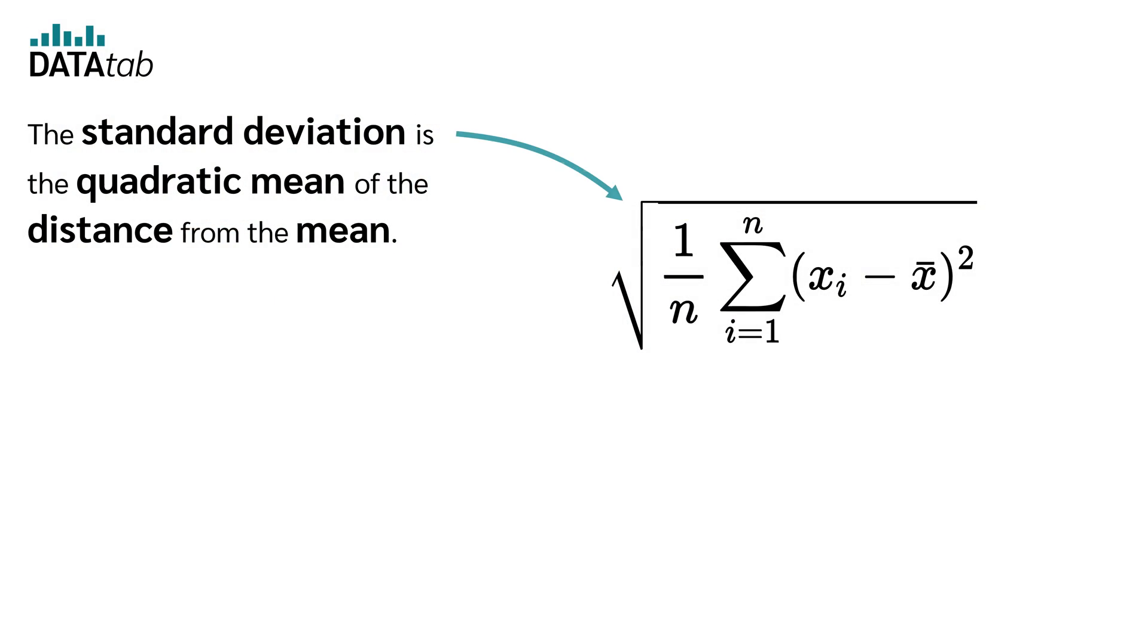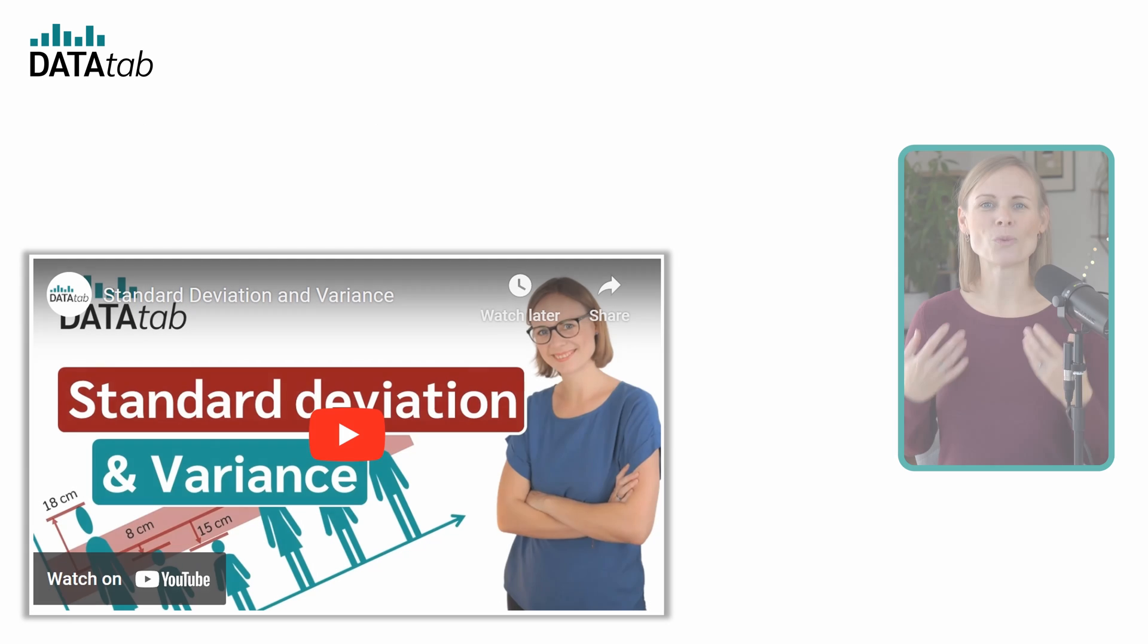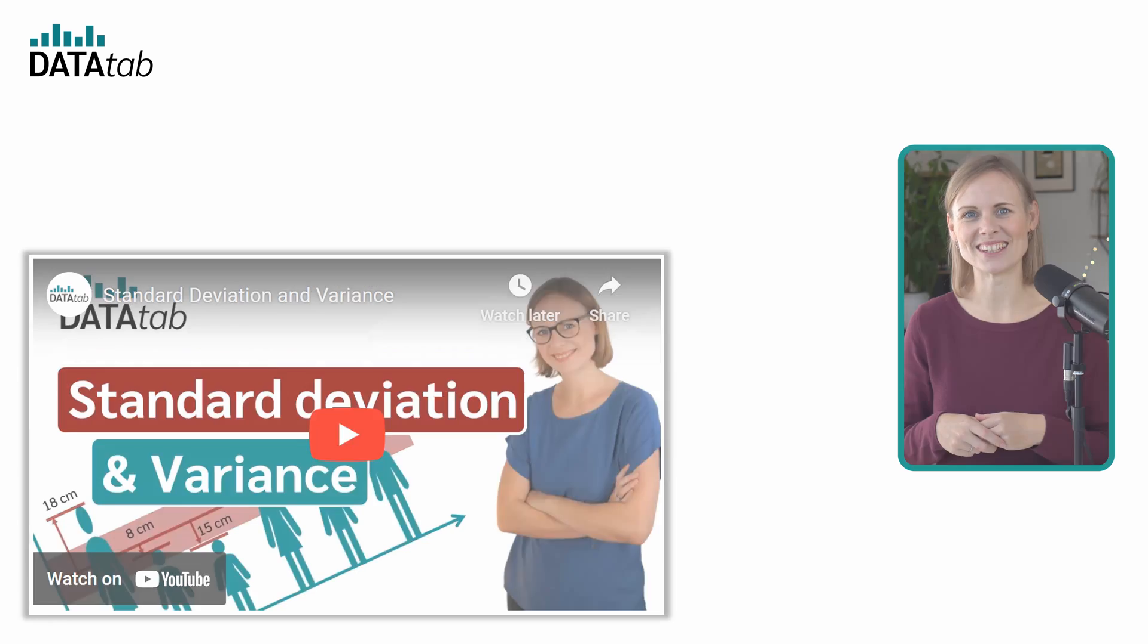But what is the difference between the standard deviation and the variance? As we now know, the standard deviation is the quadratic mean of the distance from the mean. The variance now is the squared standard deviation. If you want to know more about the standard deviation and the variance, please watch our video.